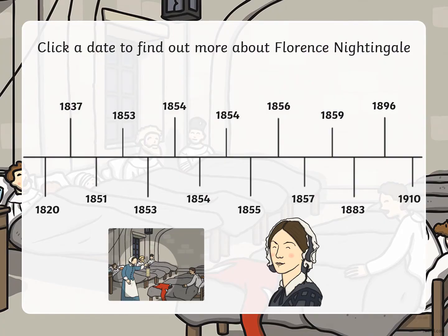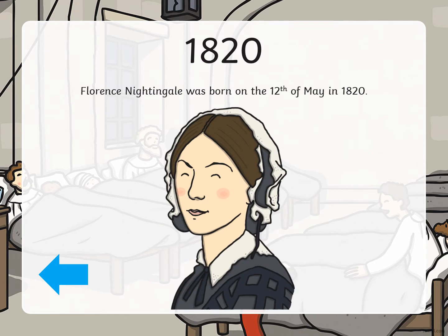We're going to start at the beginning. You can see the very first date on our timeline is 1820, and it goes in order from the dates, with the last date at the end being 1910. So let's begin: in 1820, Florence Nightingale was born on the 12th of May — exactly 200 years ago.